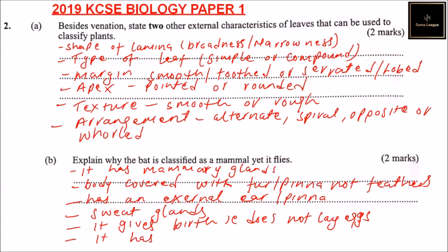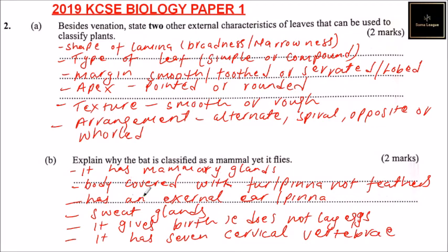It also has seven cervical vertebrae. So those are six points why a bat is classified as a mammal yet it flies like a bird. If you mention any two of these, you should be able to score two marks. That's why I've given you six of them — at least if you remember any two, you will be able to get full score in this question. Thank you.